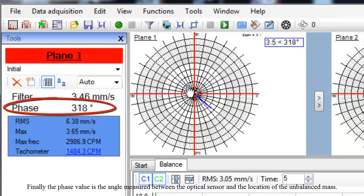Finally, the phase value is the angle measured between the optical sensor and the location of the unbalanced mass.